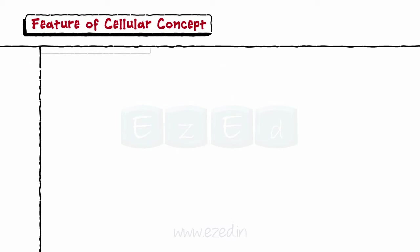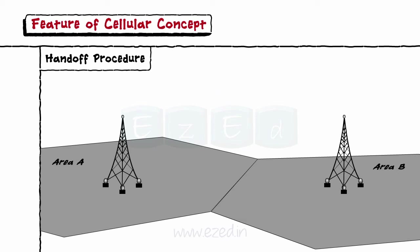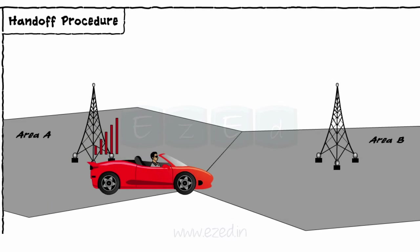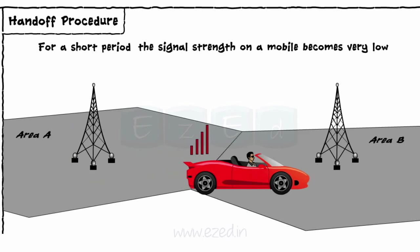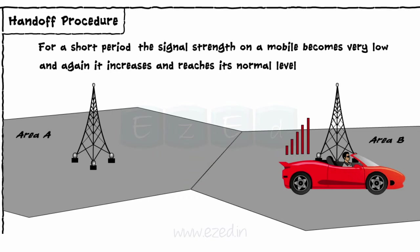Let's see what we mean by the handoff procedure. Consider a situation where we are travelling from place A to place B by car. Sometimes, for a short period of 2 or 3 seconds, the signal strength on our mobile becomes very low, and then it increases and reaches its normal level again. Have you ever thought why this happens? The answer is the handoff procedure.